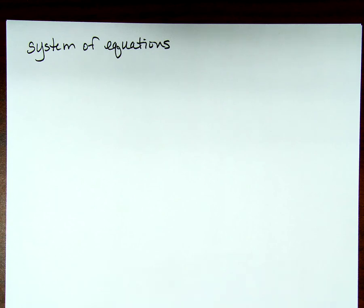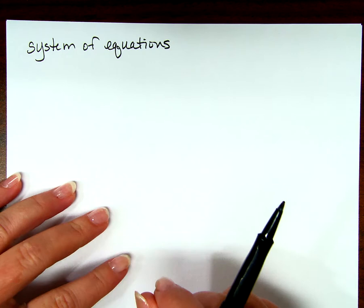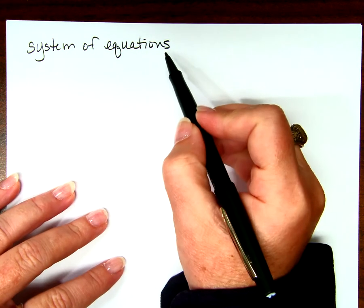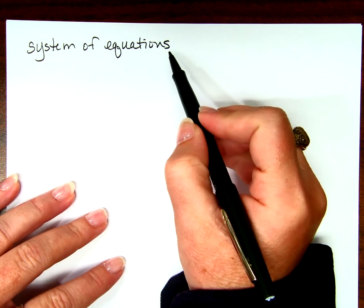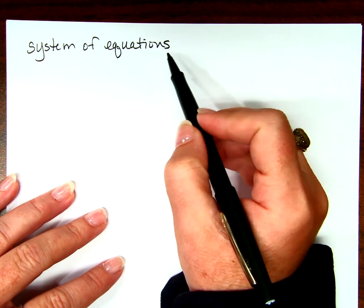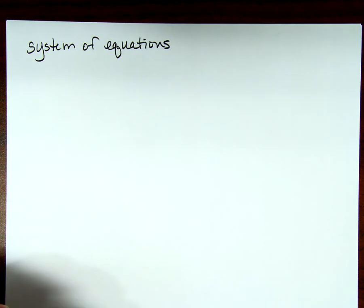What is a system of equations? So more than one, right? You can tell just by your context clues that it's multiple equations.